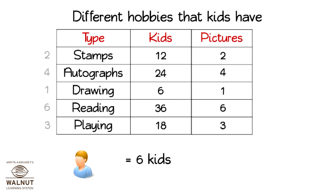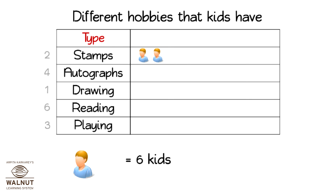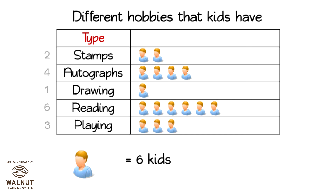We lightly write the number of pictures that we need on the left side. We are now ready to put the pictures in and make it a proper pictograph. We make space for the images, then go on putting the images for each hobby. After it is done, we erase the numbers we had written to the left and the pictograph is ready.